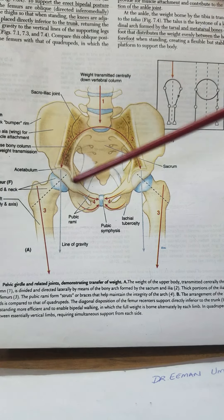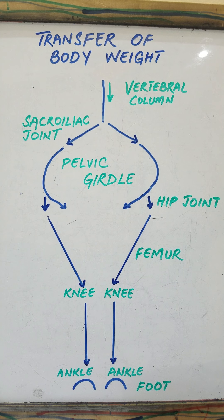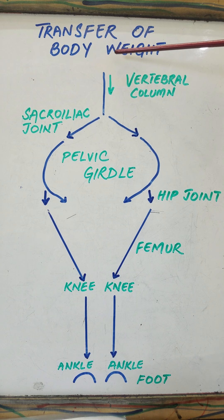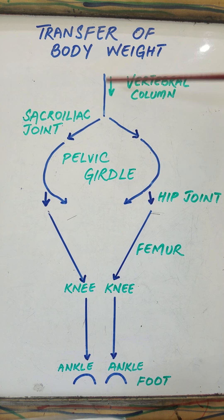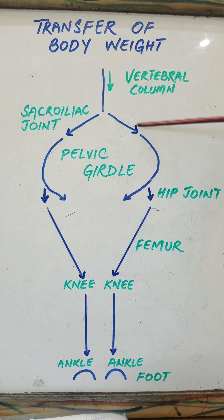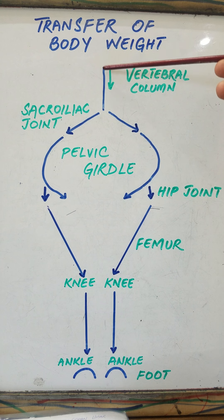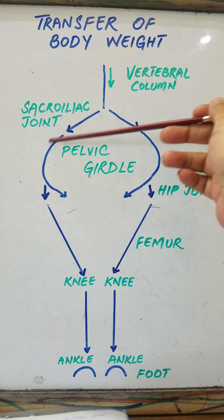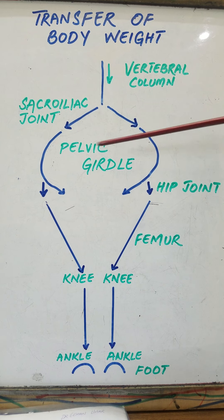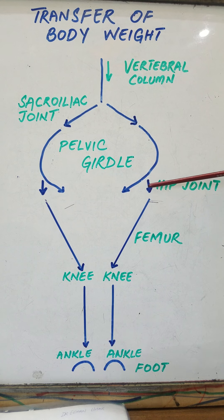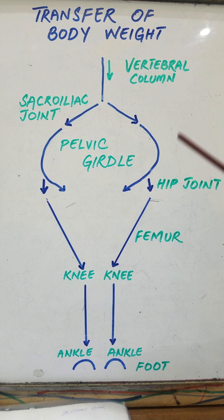The pelvic girdle attaches the free lower limb to the axial skeleton. The sacrum is common to both the axial skeleton and the pelvic girdle. This diagram shows the transfer of body weight — it is transferred vertically downwards via the vertebral column to the sacrum, and then via the sacroiliac joints to the pelvic girdle.